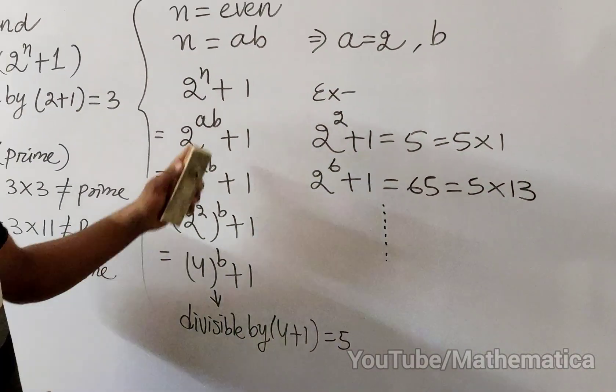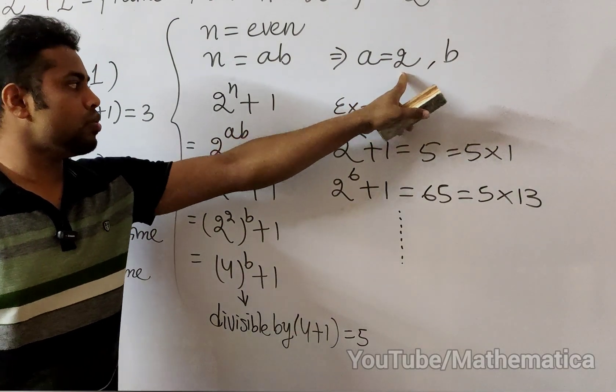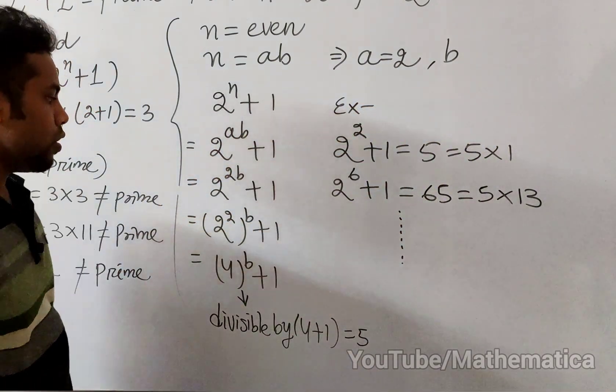So you see, if n is even and one prime factor contains 2, then this is always composite, not prime.